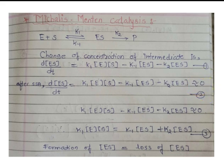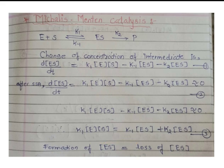This gives us equation 3: K1[E][S] minus K-1[ES] minus K2[ES] = 0. Transferring the negative terms to the right side: K1[E][S] = K-1[ES] + K2[ES]. This means the rate of formation of the intermediate equals the rate of its decomposition.